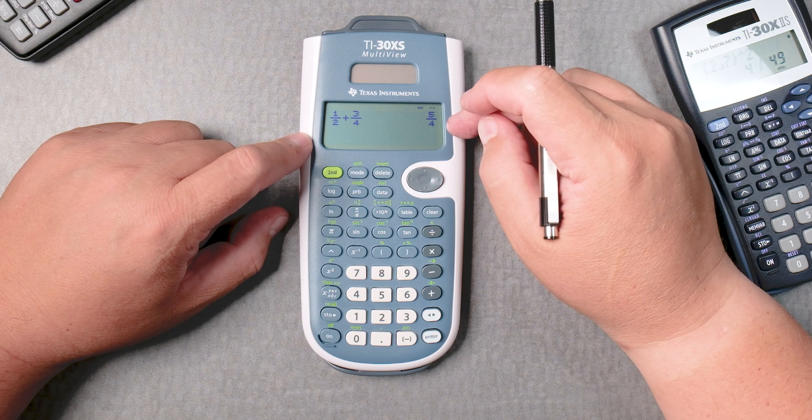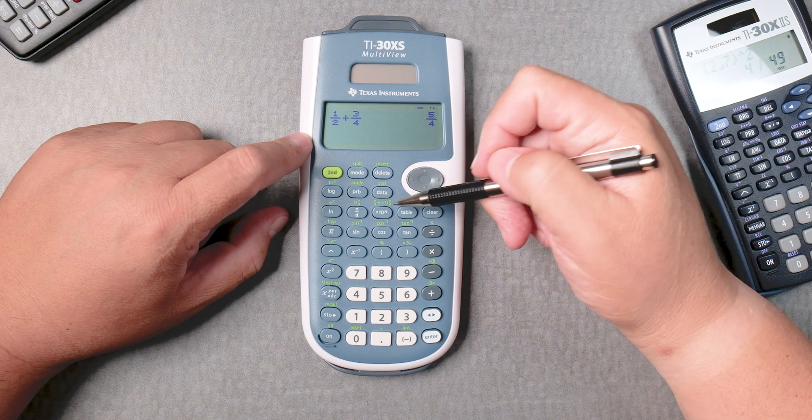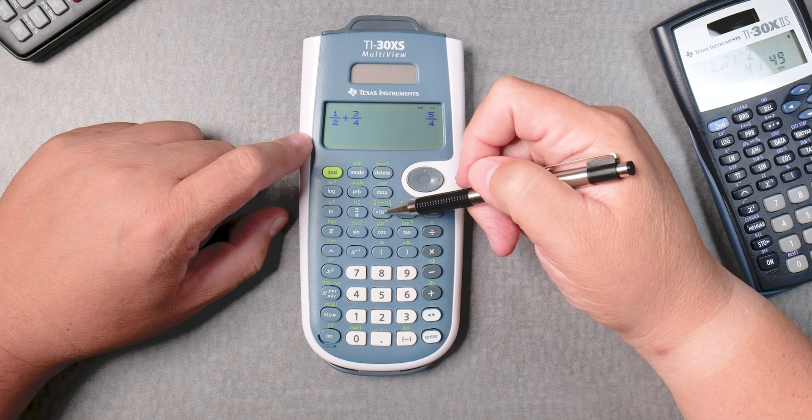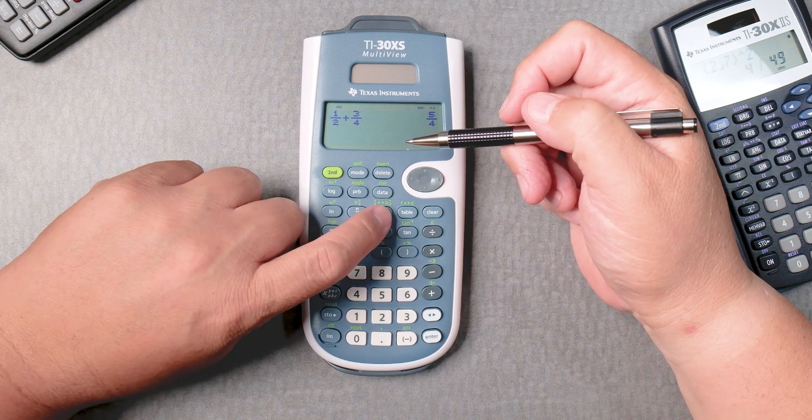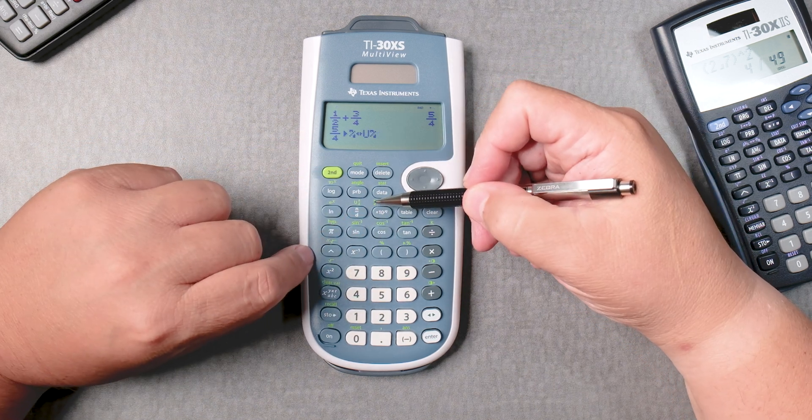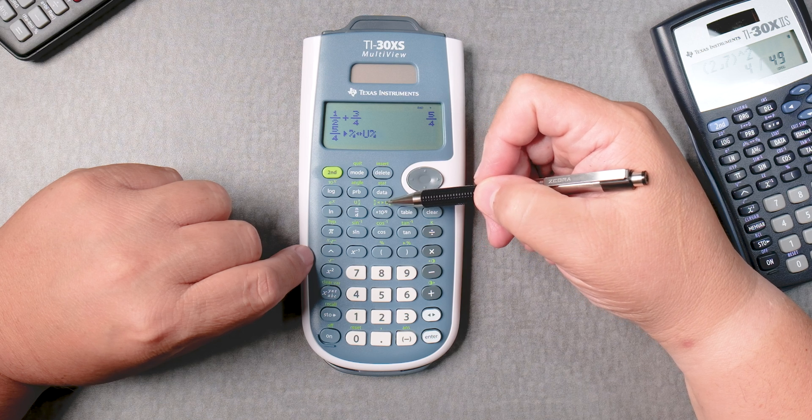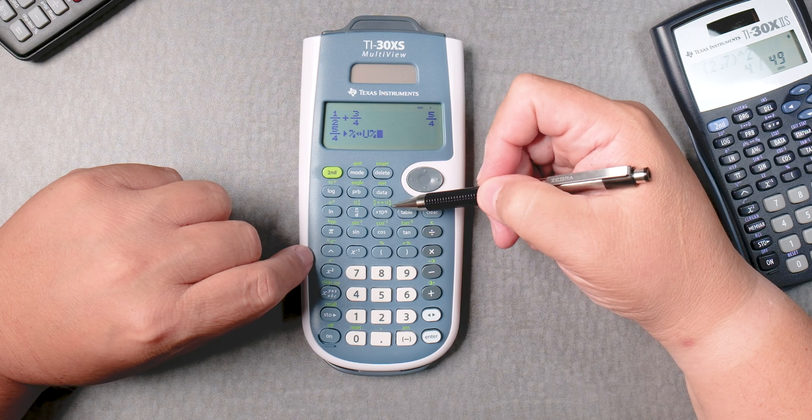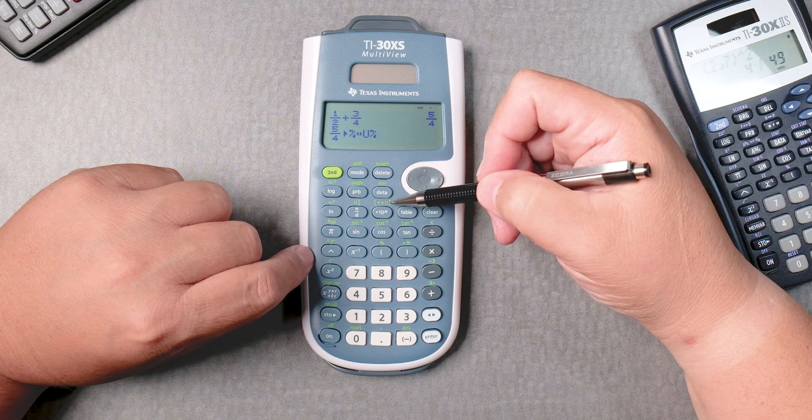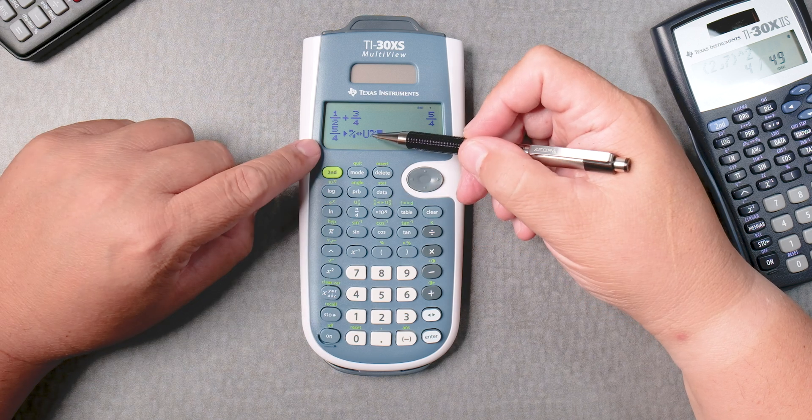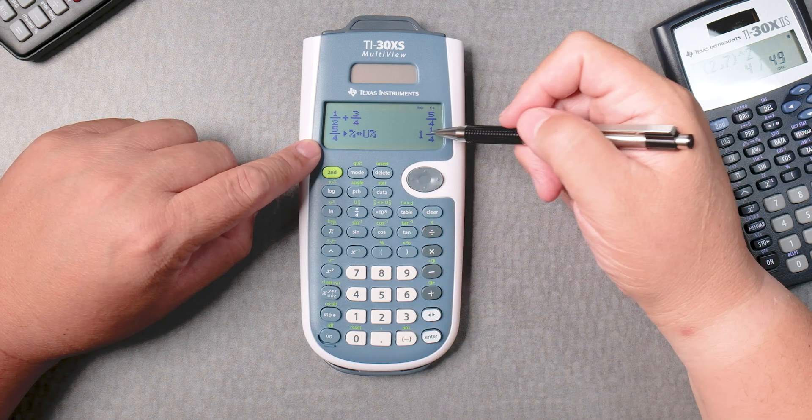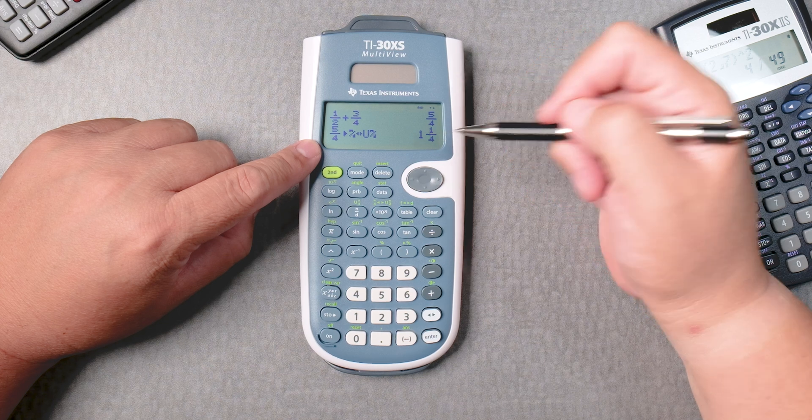Let's say you want this to be an improper fraction. It's right here under the times 10 to the n. Second times 10 to the n. Because you can see it says n over d or the other way, u n over d. Improper fraction or mixed number, which is here. And it gives you a mixed number.